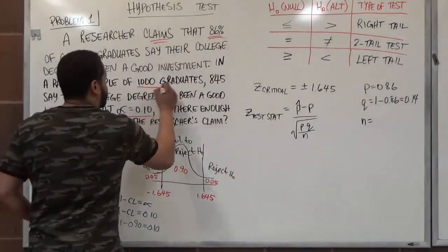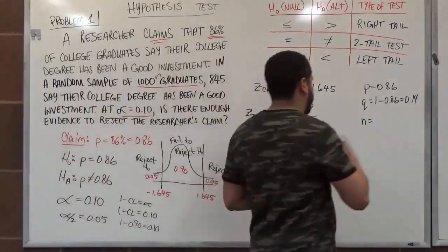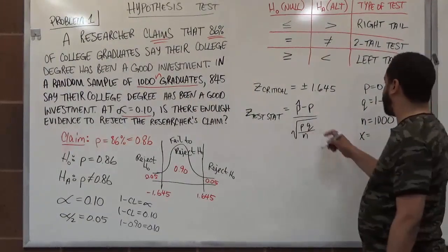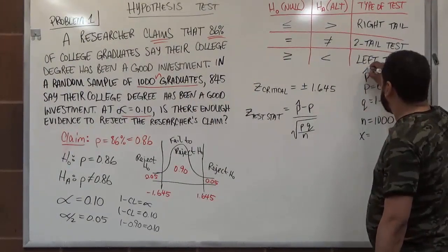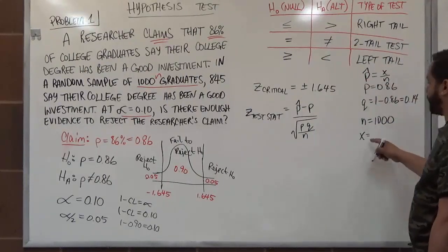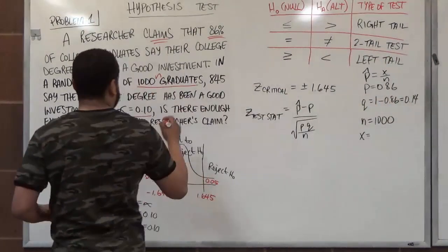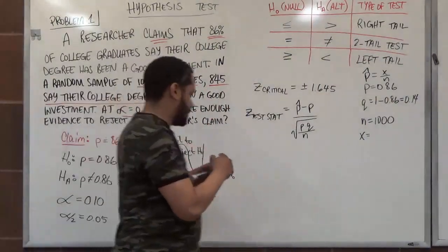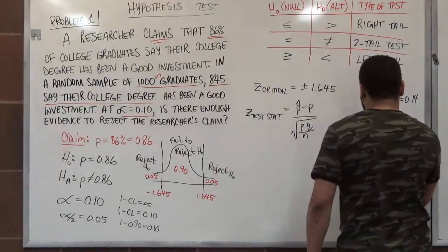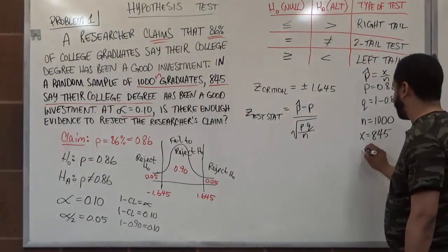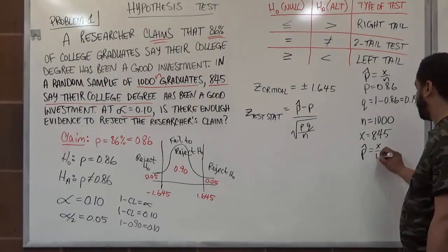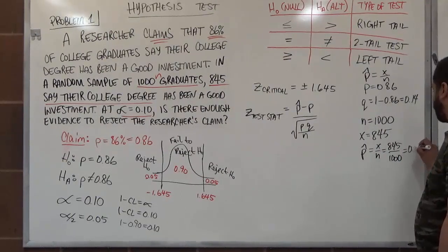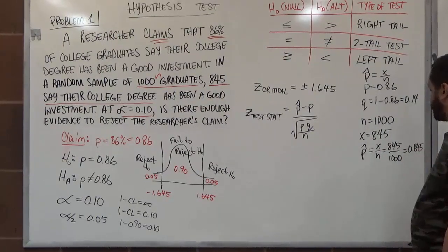So here our n is our number of samples, and here we see the 1,000 graduates are our n. So here we have 1,000. Our x, to make p-hat, p-hat is the value x divided by n. So to make the p-hat, we also need the x, and x is the 845 college students who say their degree has been a good investment. So we have here 845. So then we have the p-hat is x over n, which is 845 divided by 1,000, and this is 0.845. So there's our p-hat. We have everything we need to calculate this now.